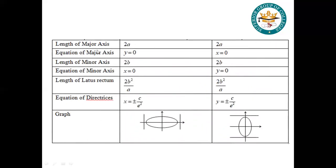The length of the major axis is 2a, and here too, because the major axis is 2a whether on y or x. The equation of the major axis is y = 0 because the work is on the x-axis, so y is 0. When the work is on the y-axis, x is 0. The length of the minor axis is 2b. The equation of the minor axis is x = 0 or y = 0.